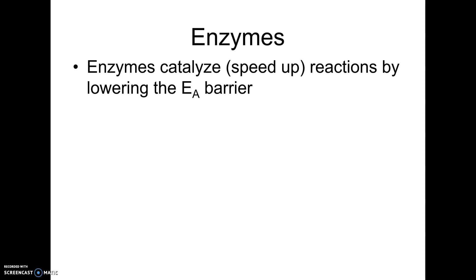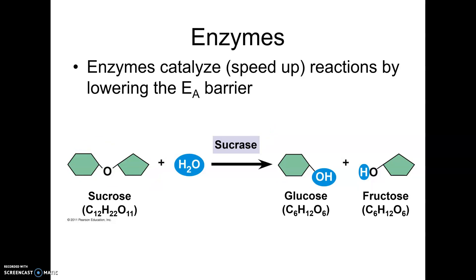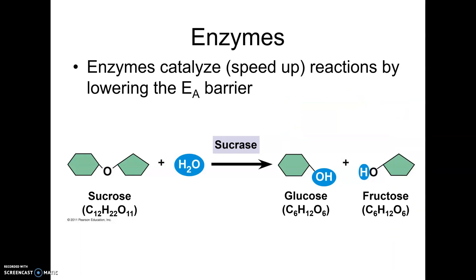Enzymes speed up reactions by lowering the activation energy. Take sucrase as an example: sucrose, table sugar, breaks into glucose and fructose — this is an exergonic reaction that releases energy, but it might happen very slowly. Sugar sitting in your house for 10 years wouldn't break down. But add an enzyme and it breaks down in seconds. Another great example we'll work with in the lab is peroxide. Peroxide breaks down into water and oxygen — a favorable reaction. You can buy peroxide and keep it for years with very little breakdown. But if you add catalase, the enzyme in your cells and blood, it bubbles on a cut and the peroxide breaks down in seconds. The enzyme catalyzes the reaction, making it happen much faster.